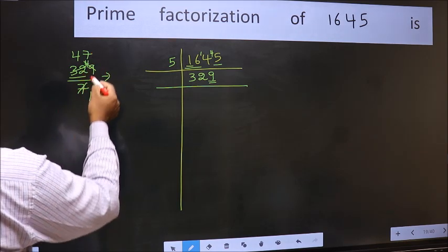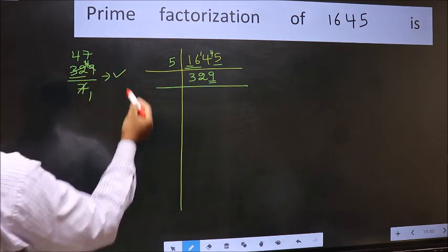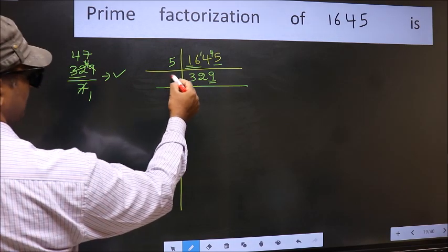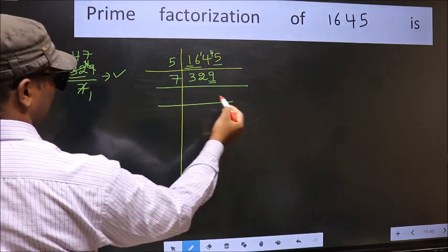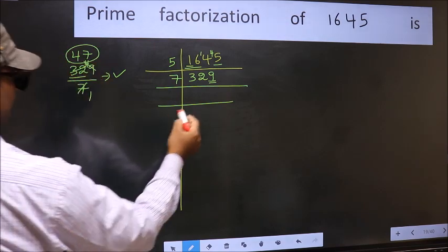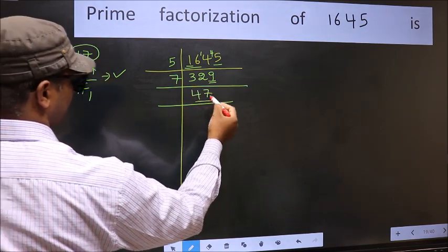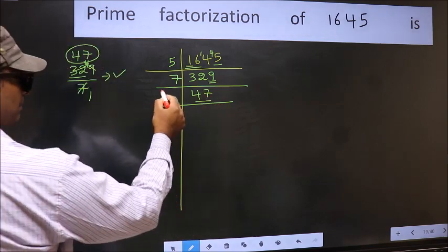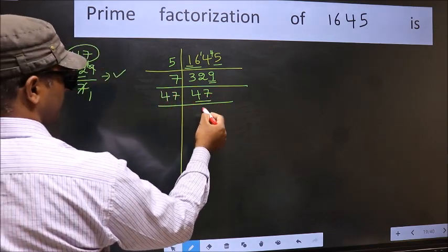No number has been left out, so this is divisible by 7. So take 7 here, and here we should write this number 47. Now we have 47. 47 is a prime number, so 47 times 1 equals 47.